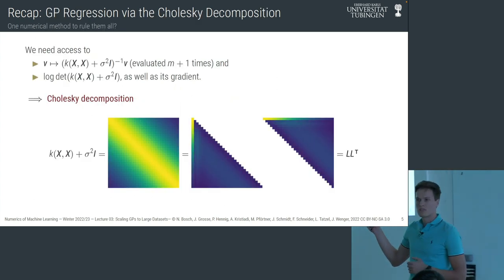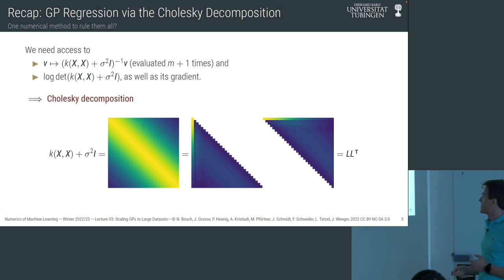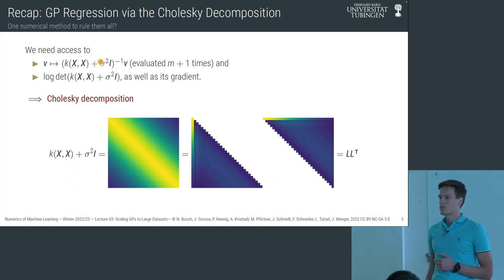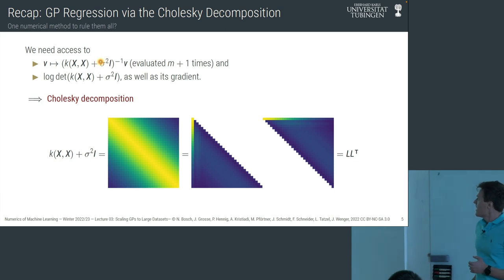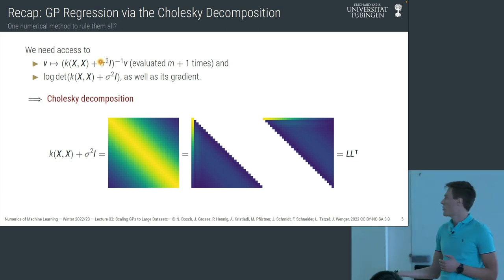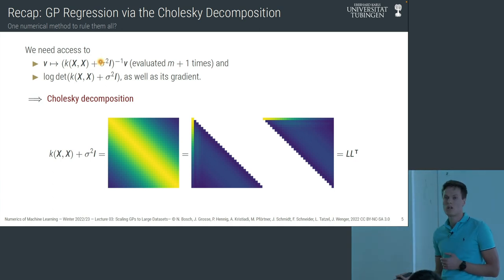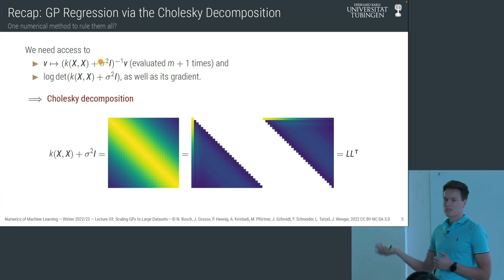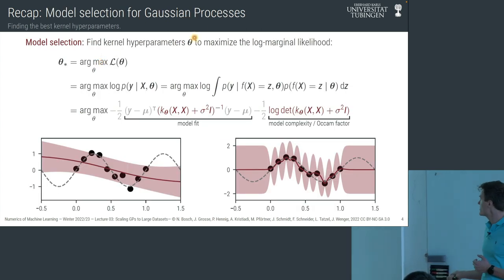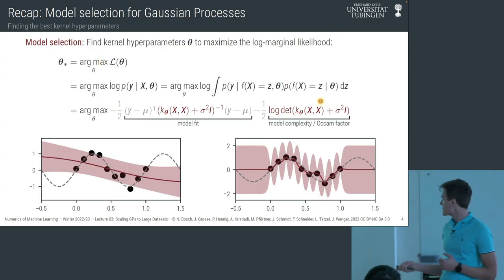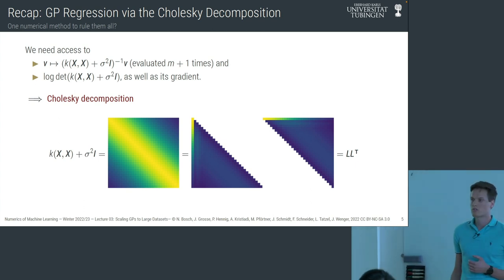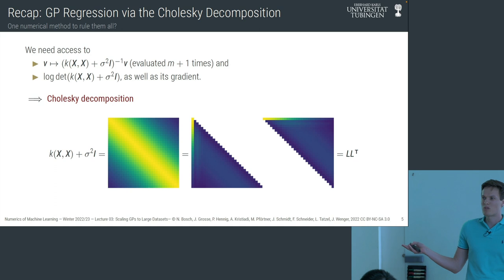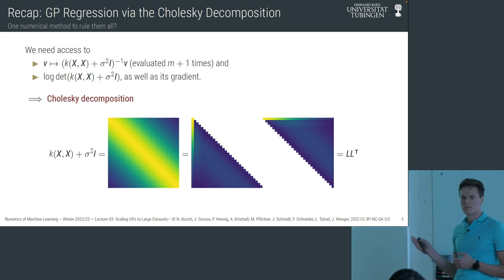Just as a reminder, for GP regression we need to do linear solves with the Gram matrix — kernel matrix plus noise — of size equal to the data set. We need that for both the posterior mean and the covariance. For model selection we need the log determinant and its gradient for gradient-based hyperparameter optimization. Last week we developed that you can use a Cholesky decomposition for this — it computes the log determinant and linear solves. Problem solved, right?